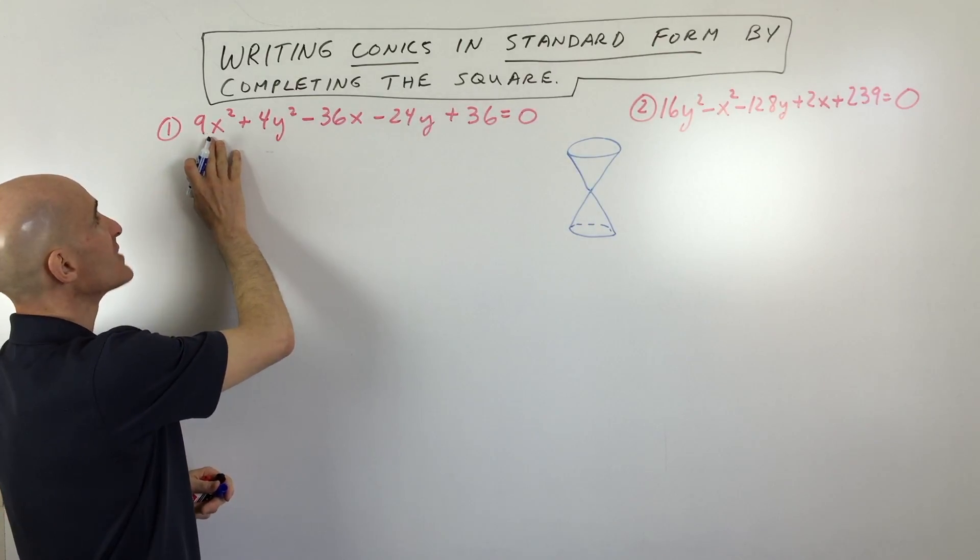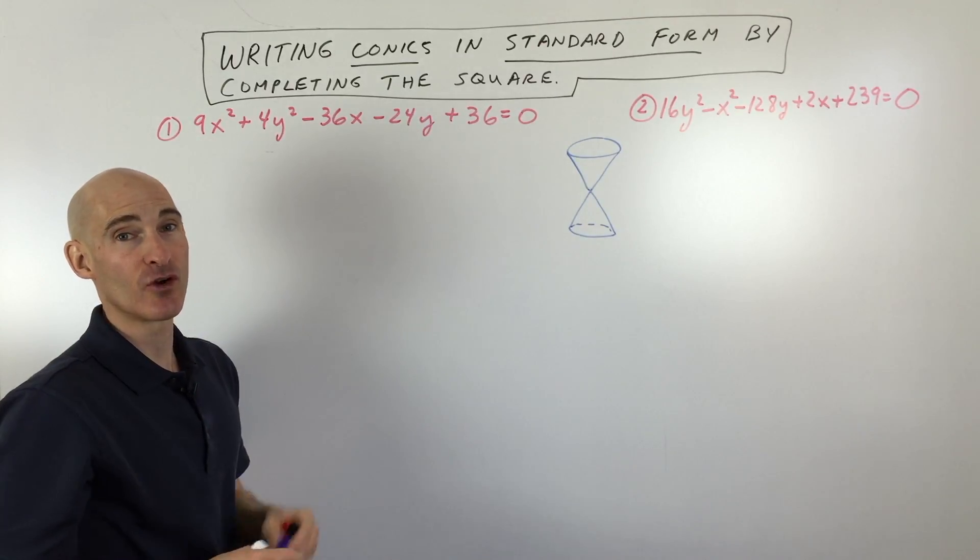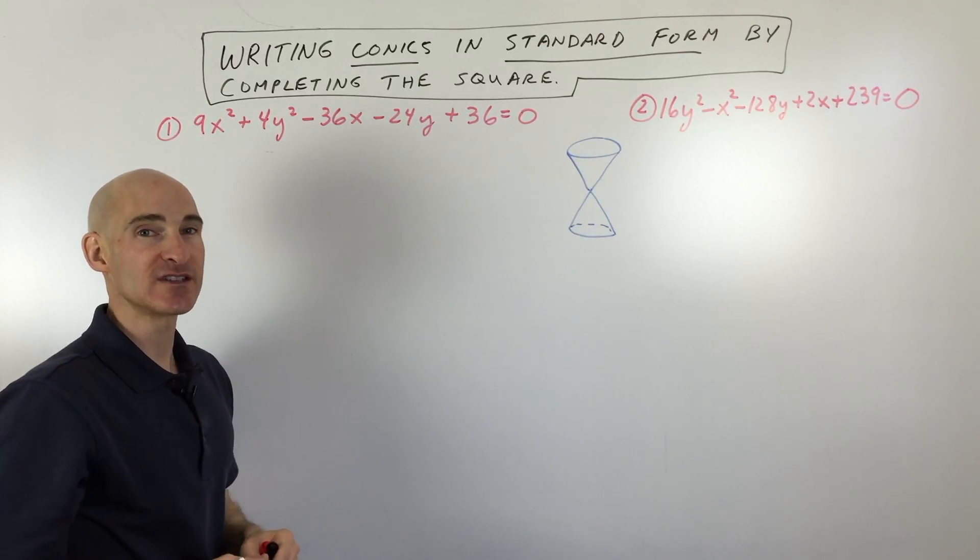Well you can see that there's an x squared term and a y squared term. If there was just an x squared term but not a y squared term or vice versa, we would know that it's a parabola.